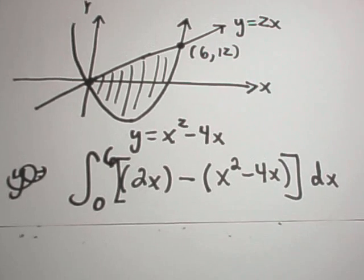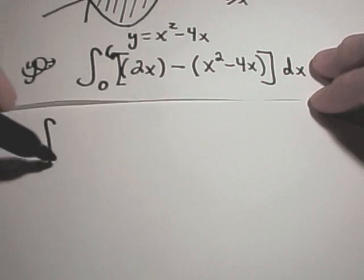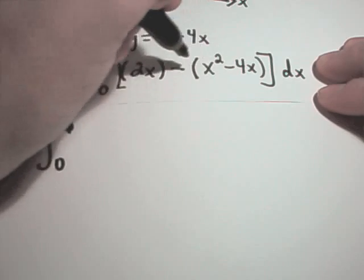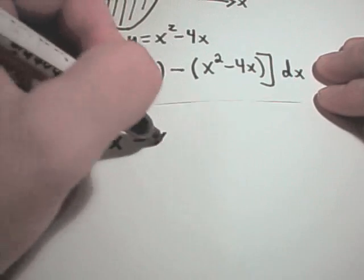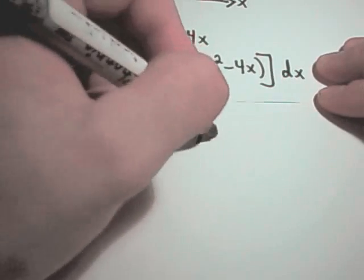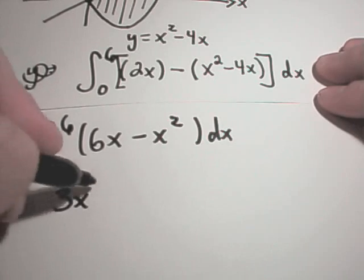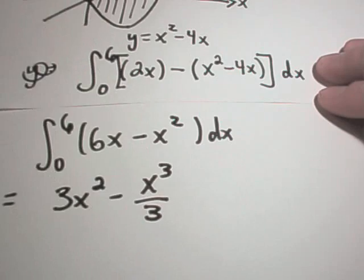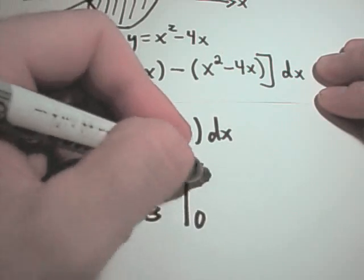So let's go ahead and work this one all the way out. So you'll have from 0 to 6. If you take 2x, you'll get minus negative 4x, which will give you a 6x. Then you'll have minus x squared. When we integrate that, we'll get 3x squared minus x cubed over 3.